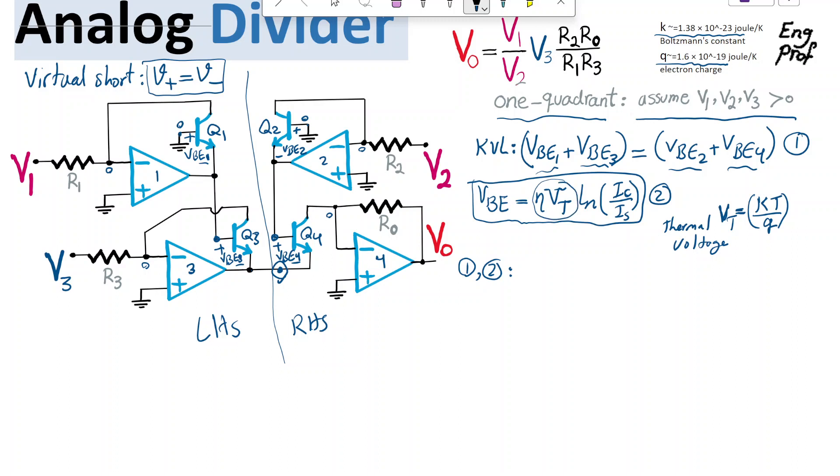So basically that would cancel out from both side of the equation, and we get natural logarithm for VBE1, the IC1, which is effectively this current. So let's say IC1 or I1, which is this current.